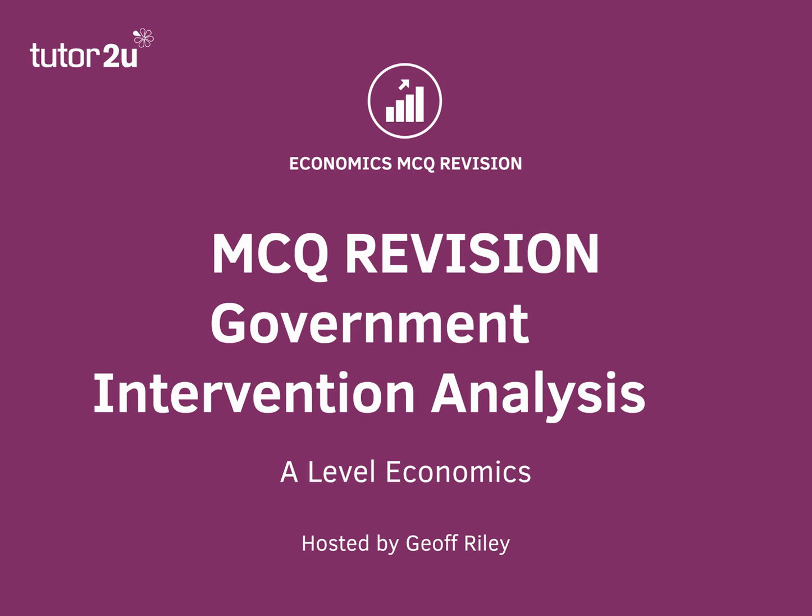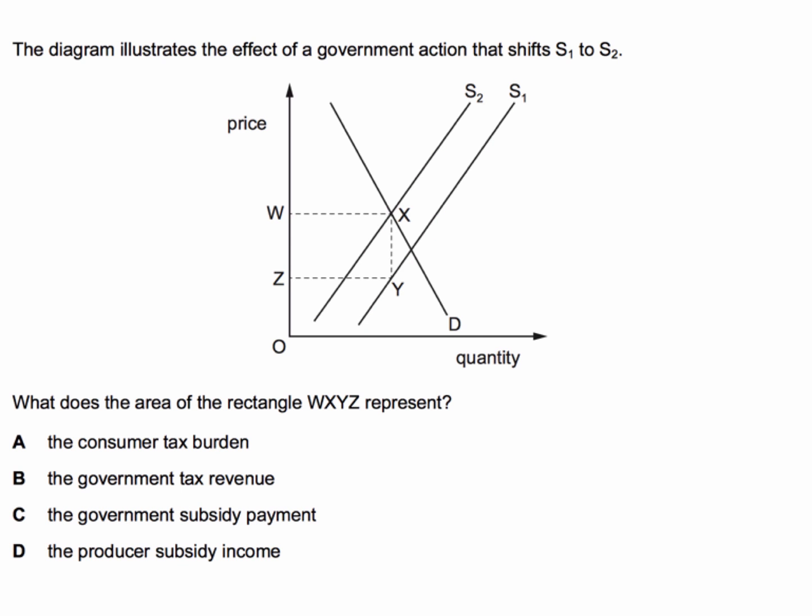Hi there, and here's another chance to have a go at a past exam question on microeconomics. Today's question focuses on the impact of a government intervention in the market. The diagram illustrates the effect of a government action that shifts supply curve S1 to S2, and the question is: what does the area of the rectangle WXYZ represent? Press that pause button, have a go, and come back when you're ready.